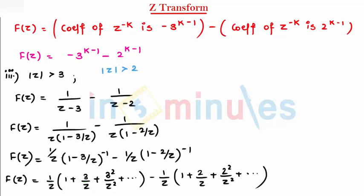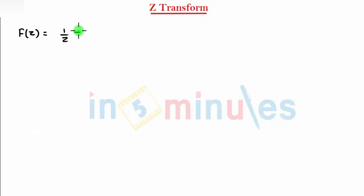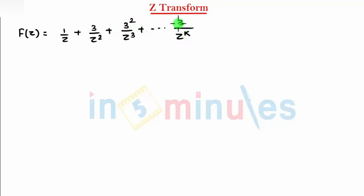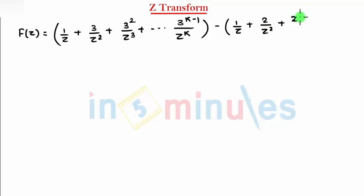Now let's write the series in a proper way. Multiplying 1 by z inside gives: 1 by z, plus 3 by z squared, plus 3 squared by z cubed, plus dot dot dot. If you say this index is k, this becomes k minus 1, so that's my first term. And the second term: minus 1 by z gives minus: 1 by z, plus 2 by z squared, plus 2 squared by z cubed, plus dot dot dot. If we write this as z raised to k, this becomes 2 raised to k minus 1.